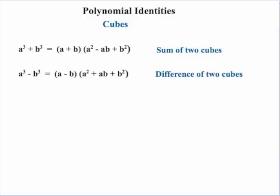We also have polynomial identities for cubes. If we have two cubes, a cubed plus b cubed, that would factor out to be a plus b times a squared minus ab plus b squared. And if we have the difference of two cubes, a cubed minus b cubed, that would be a minus b times a squared plus ab plus b squared.